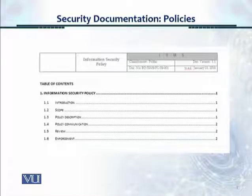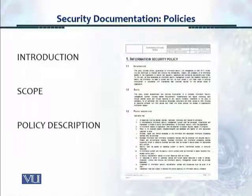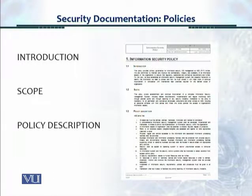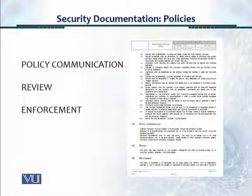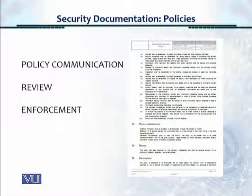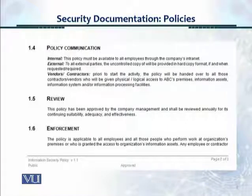This is the table of contents for this information security policy, which has five or six different sections. The first sample page sets out the scope and then there's a policy description — the write-up of the policy. On the next page there's a policy communication section, a review section, and an enforcement section. You can go to the internet and pick up many template policies and take one that's relevant and suitable for your organization. The communication section describes internally how it is to be shared, how it is to be shared external to the organization, and how it is to be shared with vendors and contractors.